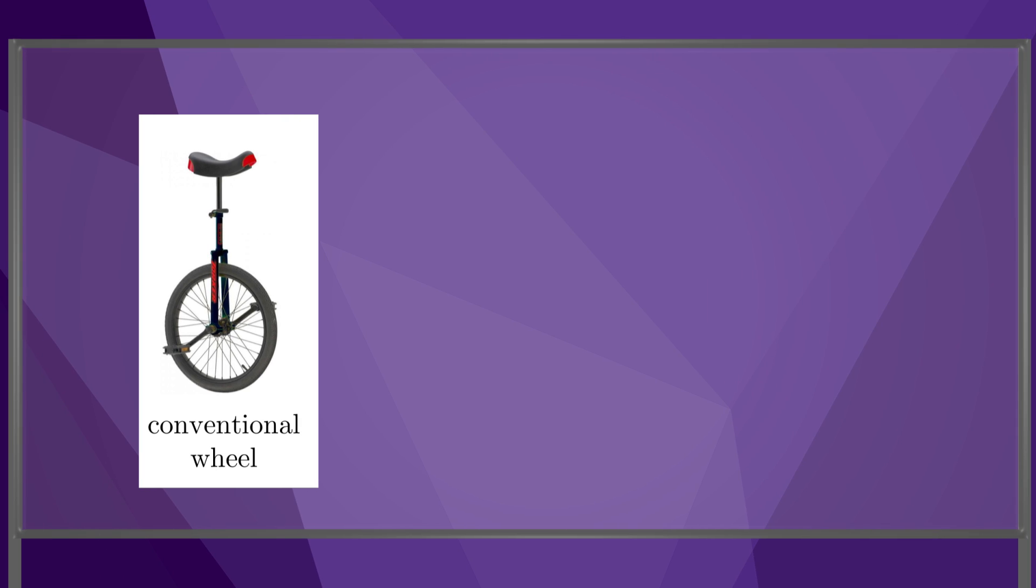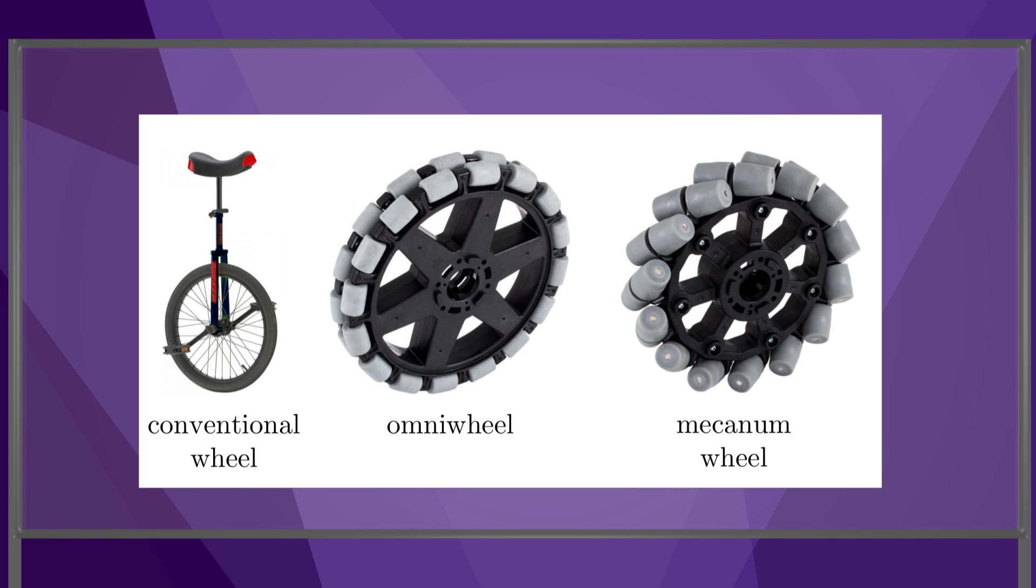Wheeled mobile robots employ either conventional wheels, like this unicycle wheel, that do not allow sideways sliding, or wheels that allow sideways sliding through the use of rollers around the rim of the wheel, such as the Omni wheel and the Mecanum wheel.